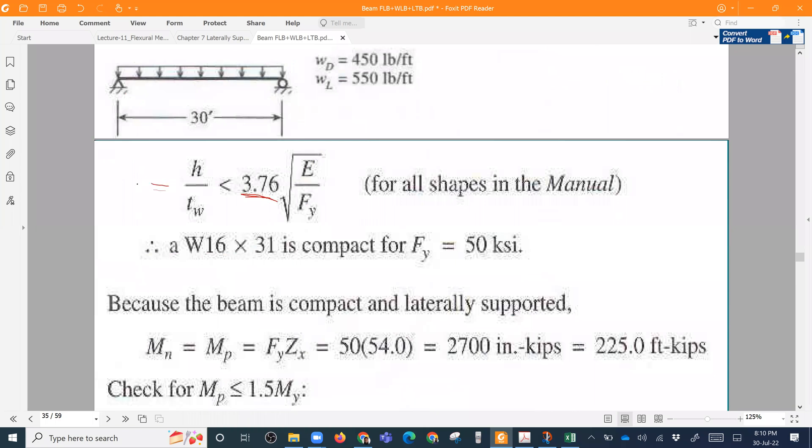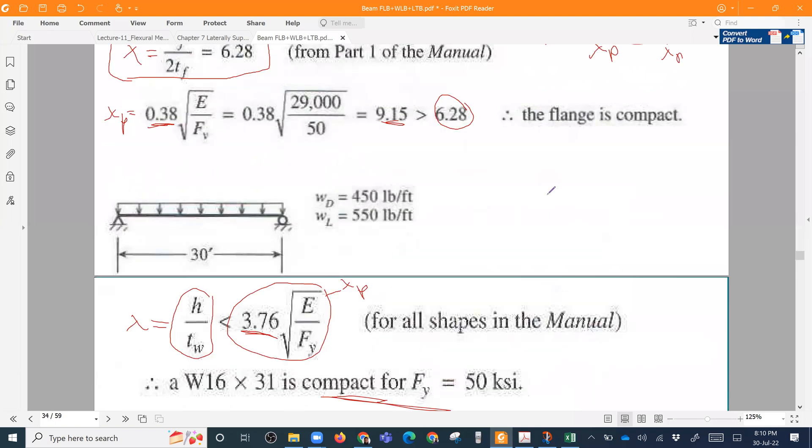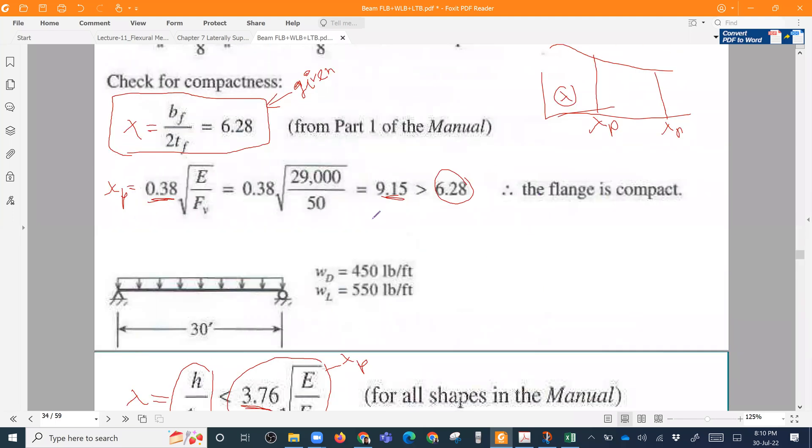Similarly we can find out the criteria for the web. The formula is 3.76 root over E by Fy. This is our lambda p. h by tw is less than lambda p, so my web is also compact.